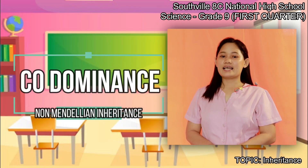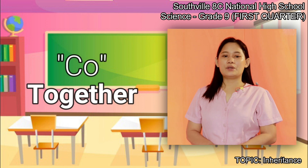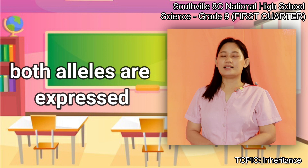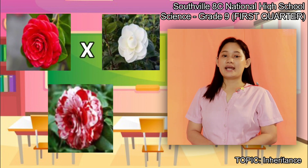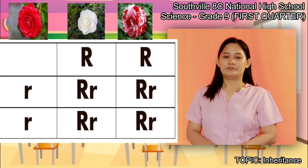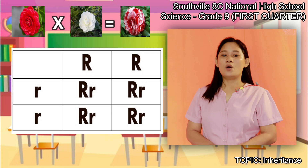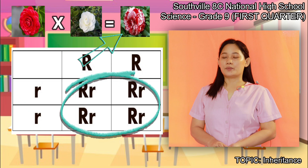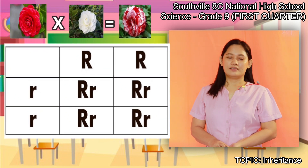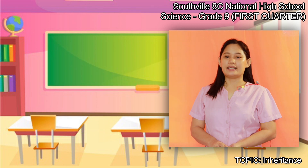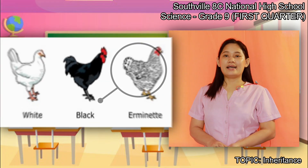Another non-Mendelian inheritance is what we call co-dominance. The prefix co-, meaning together, is added to the word dominance, which means both alleles are expressed. Let us examine this cross between red and white flower expressed in a co-dominance pattern of inheritance. The phenotype of an offspring in this cross is 100% red and white, or what we call speckled flower, where both phenotypes of the parents' alleles are expressed at the same time. Another example is a cross between black and white chicken, resulting in erminette chicken, or black and white chicken.